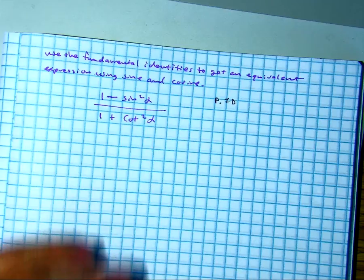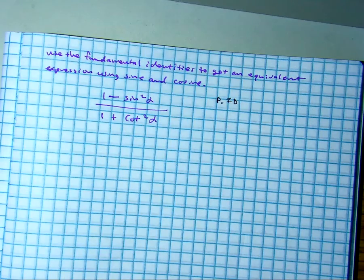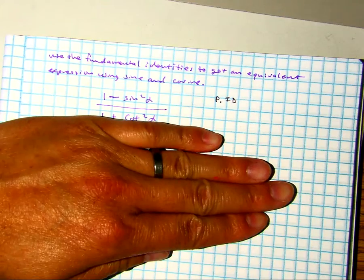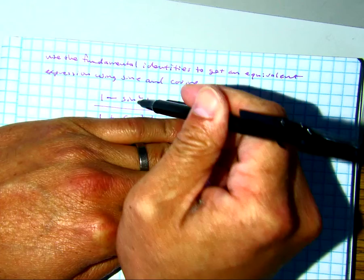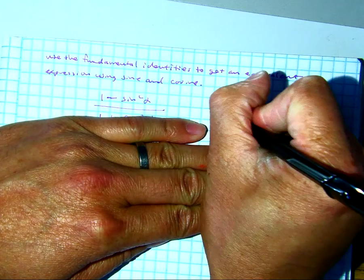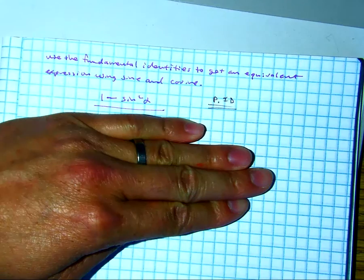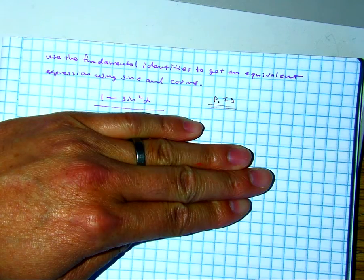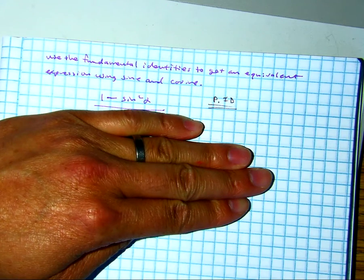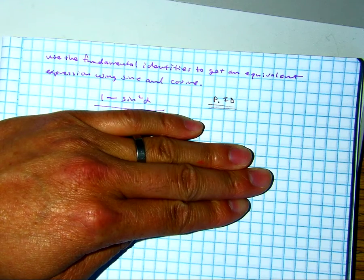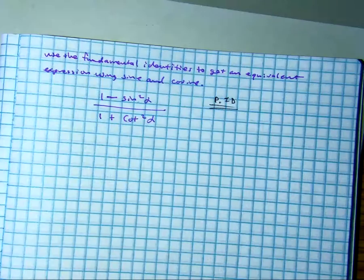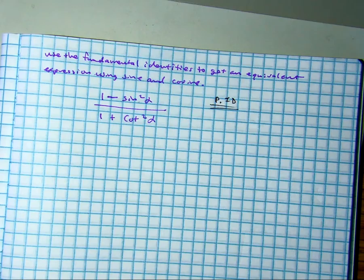Okay, pick one, numerator and denominator. Look on your formula sheet. What is a Pythagorean identity that has this? Should have your formula sheets right next to you. We'll come back to you, Macy.